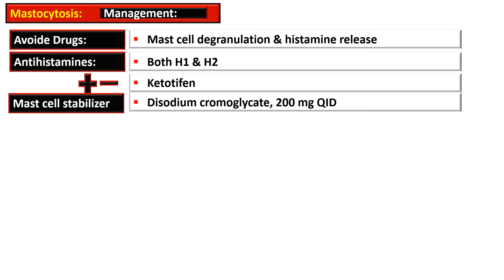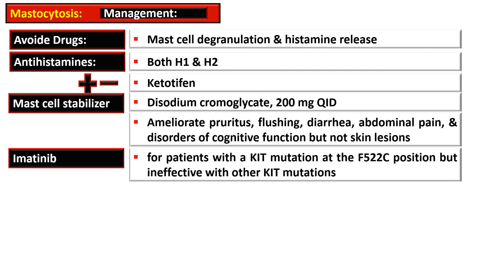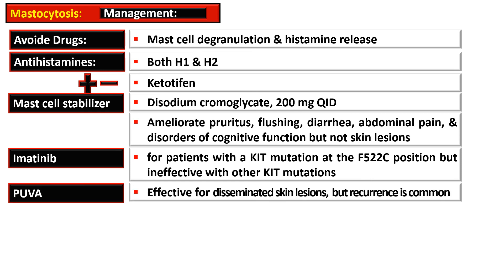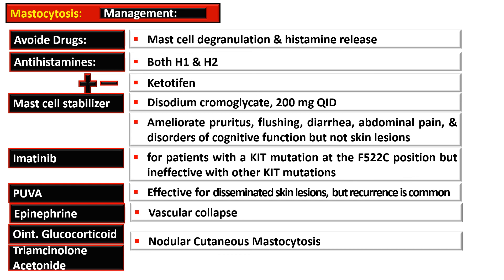Mast cell stabilizers such as disodium cromoglycate 200 mg four times a day is helpful and ameliorates pruritus, flushing, diarrhea, abdominal pain, and disorders of cognitive function, but has no effect on skin lesions. Imatinib is used for patients having KIT mutation at the F522C position but is ineffective with other KIT mutations. PUVA therapy (psoralen plus ultraviolet A) is effective for disseminated skin lesions but recurrence is common. Epinephrine is used during vascular collapse, and in nodular cutaneous mastocytosis, topical glucocorticoids and triamcinolone acetonide are used.